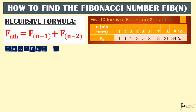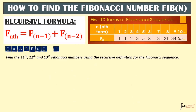Okay, let's have another example. Find the 11th, 12th, and 13th Fibonacci numbers using the recursive definition. To find the 11th term, Fib(11), as you can see, the first 10 terms are given: 1, 1, 2, 3, 5, 8, 13, 21, 34, and 55.